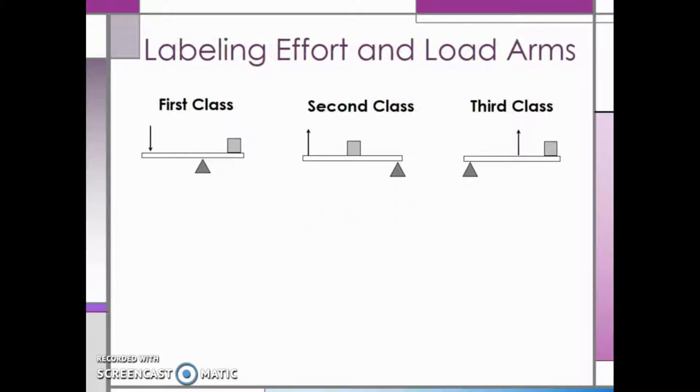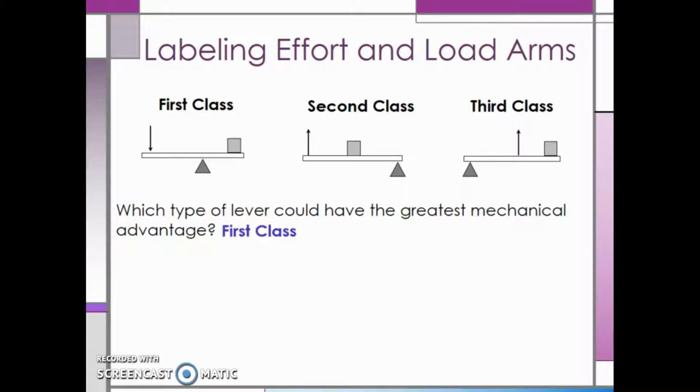Now we will answer a few more questions about the force and effort arms on levers. First, which type of lever could have the greatest mechanical advantage? That would be a first class lever because the effort arm and the load arm never overlap.